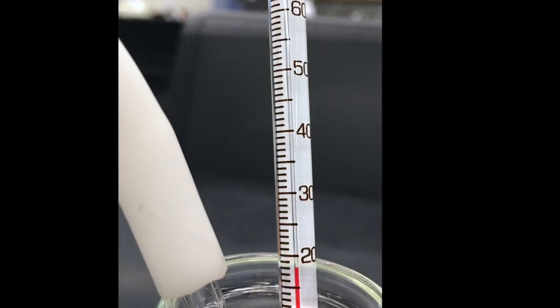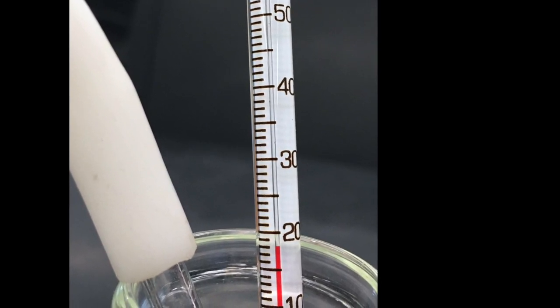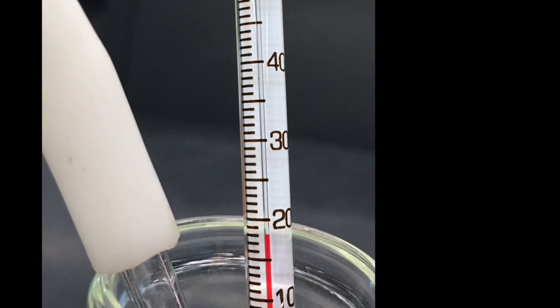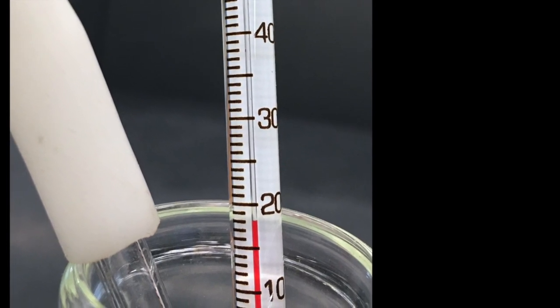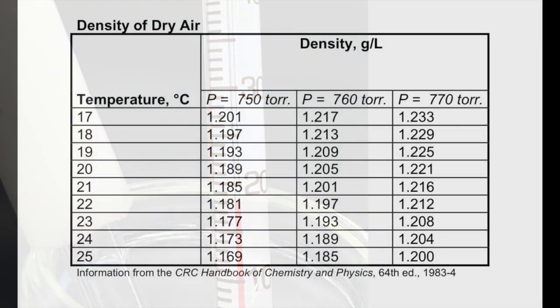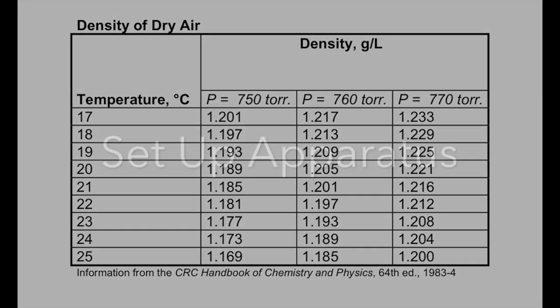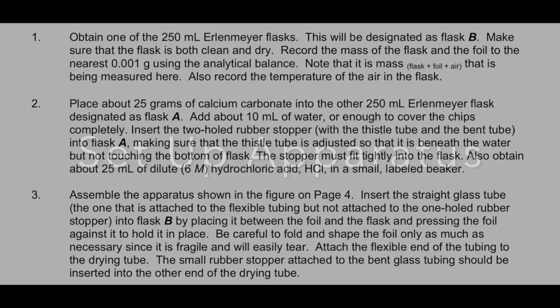We will next take the temperature of this air. You will record this temperature as well as the mass, and you will use this with the density of air table provided in the procedure. This can be used to find the mass of the air that was inside the flask, and once we know that mass we will be able to know the mass of the flask by itself without any air.